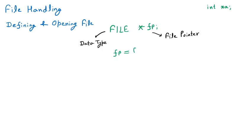That function is fopen — fopen is the function we are going to use for opening the file. In the brackets, in double quotes, we give the file name — whatever file name you want to give, you can provide. For example, if your file is demo.txt, you provide that file name, then a comma, then the mode. We will provide the mode — and what that mode is, I will tell you.